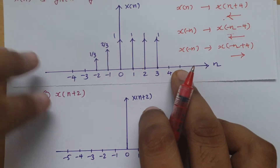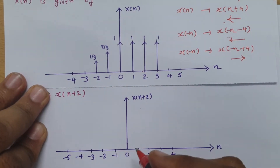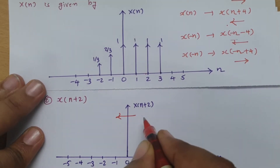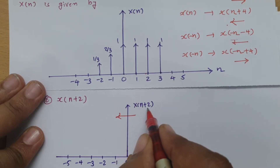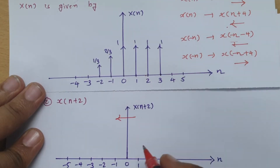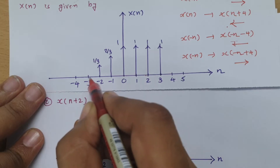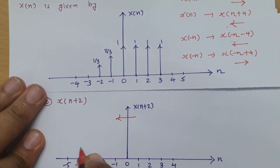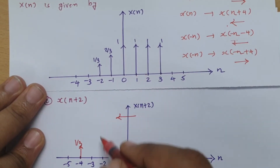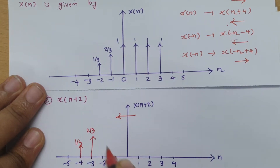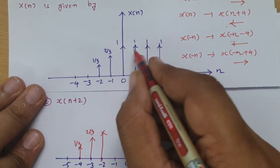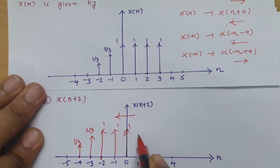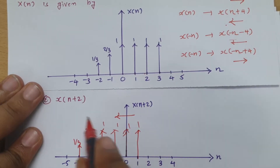Now let us solve the next case: x(n+2). For advancing, we need to shift the graph to the left by 2 positions. So the data at -2 shifts left by 2 positions to -4, giving 1/3 at -4. At -3 it will be 2/3. At -2 it will be 1. And the three data values shift accordingly in sequence.